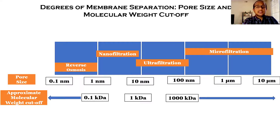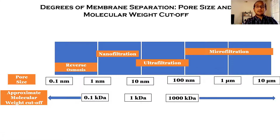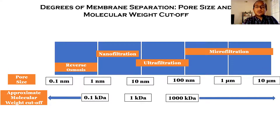The first one is reverse osmosis, or RO membrane. RO is considered one of the finest among all the filtration methods currently available. These membranes can act as a barrier for all dissolved salts and inorganic molecules, and they can also reject organic molecules with greater than 100 Dalton molecular weight. So their molecular weight cutoff is considered as below 100 Dalton.